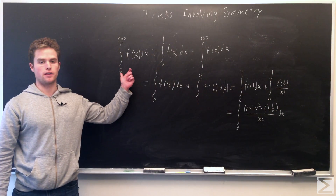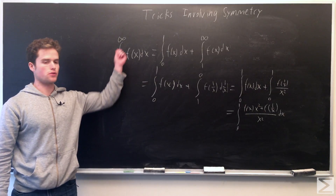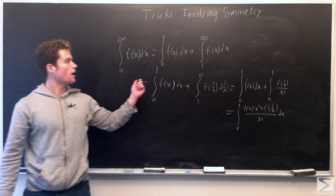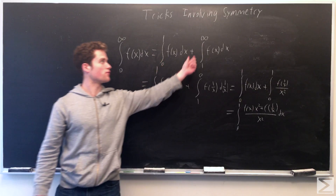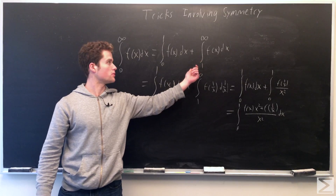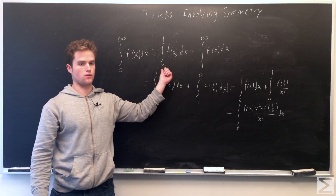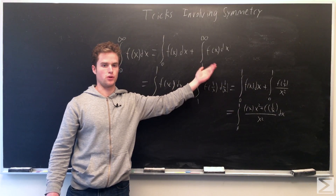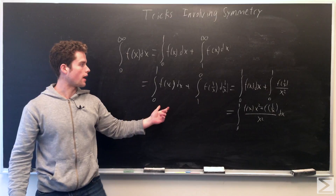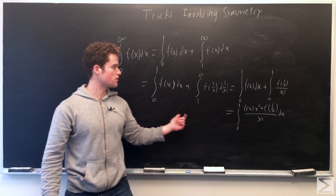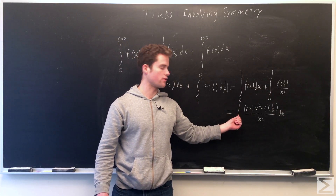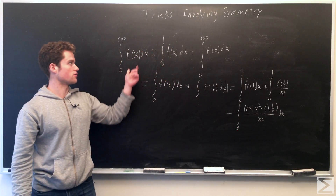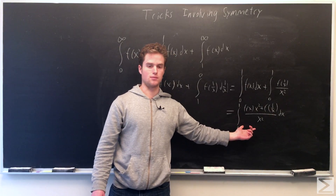Another thing we can do: we have an improper integral going from 0 to infinity of f(x) dx. We can split this into the integral from 0 to 1 and 1 to infinity. Note that the substitution x → 1/x sends the interval 1 to infinity to the interval 0 to 1. Plugging in x equals 1/x on the right integral and simplifying, we get the integral from 0 to 1 of f(x)·x² plus f(1/x) all over x² dx equals our original integral. This is sometimes quite useful.